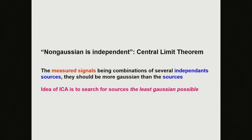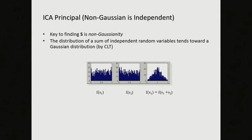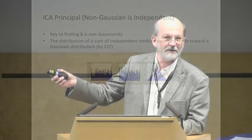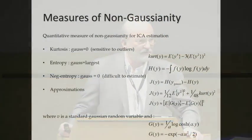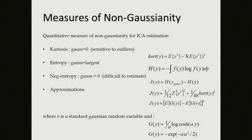Non-Gaussianity is the way you determine independence. Here are two histograms of source signals — they're not very Gaussian. But if you sum the two signals and do the histogram of the resulting mixed signal, you get something more Gaussian. There are different ways of measuring Gaussianity; one that everybody knows is the kurtosis, which is a fourth moment, but there are other ways as well.